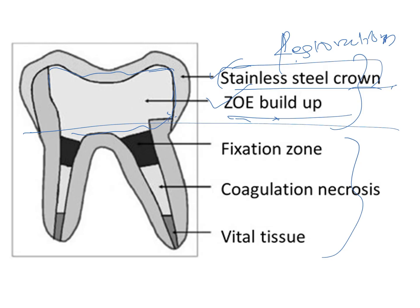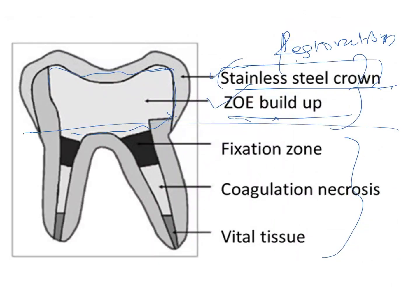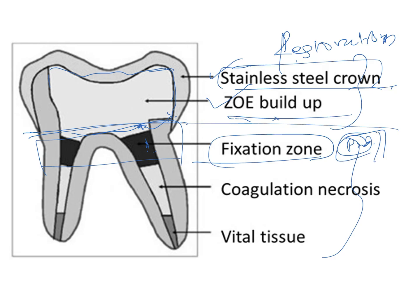In pulpotomy, the coronal pulp is removed and a cotton pellet dampened with formocresol solution is placed. Due to the formocresol reaction, the zone directly in contact with formocresol undergoes fixation — protein denaturation-type reactions occur. This is called the fixation zone, corresponding to the coronal one-third of the radicular pulp.